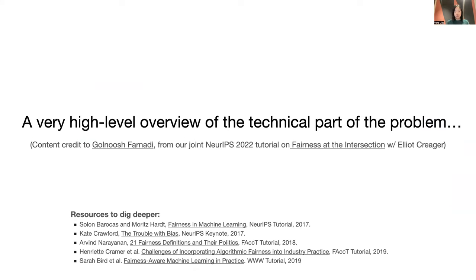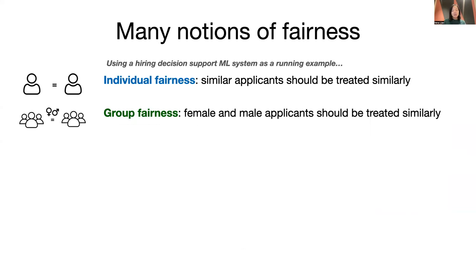Since this is a very short tutorial, I will only give a very high-level overview of fairness considerations — the technical part of the problem. If you're interested in digging deeper, here is a list of other longer tutorials and videos to watch. The first point, which is the focus of lots of fairness research, is that there are many different notions of fairness. Let's take hiring as a running example, where job applicants are assessed by an ML system — a context where allocation harms can have profound effects on people's lives.